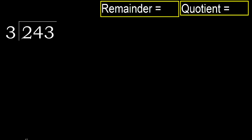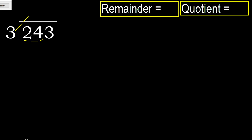243 divided by 3. 2 is less than 3, so we look at 24. 24 is not less. We need to find: 3 multiplied by which number is nearest to 24 but not greater?